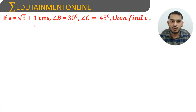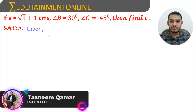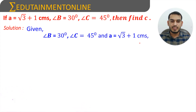If a is equals to root 3 plus 1 centimetres, angle B is equals to 30 degrees and angle C is equals to 45 degrees, then find c. So, given that a is equals to root 3 plus 1 centimetre and angle B is equals to 30 degrees and angle C is equals to 45 degrees.